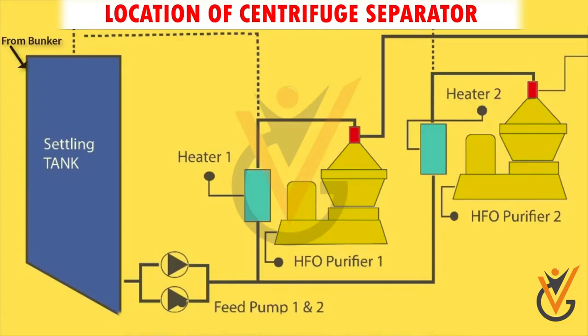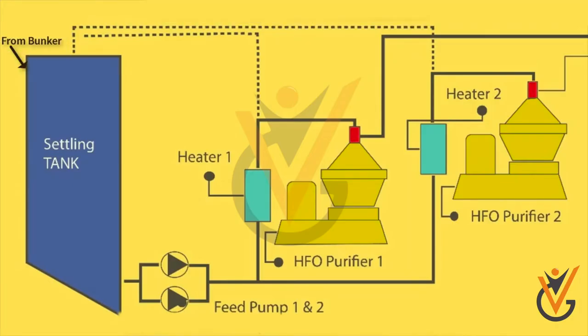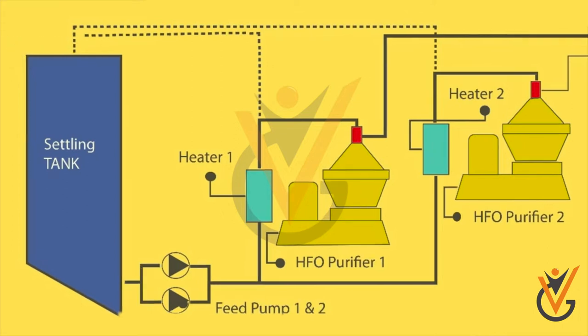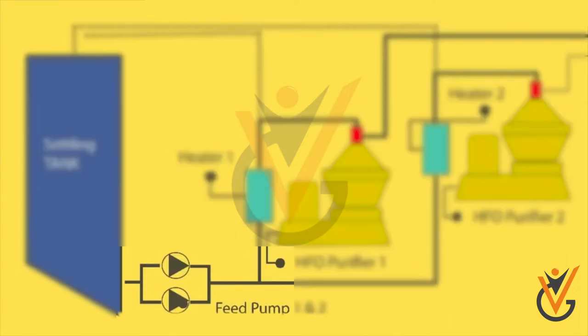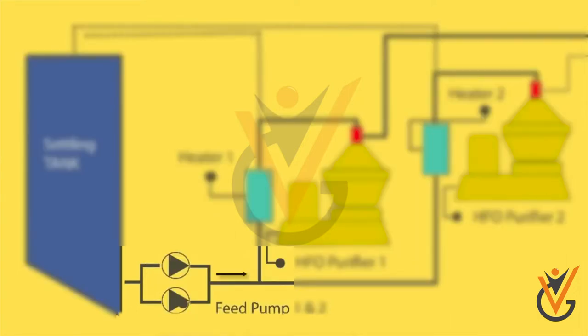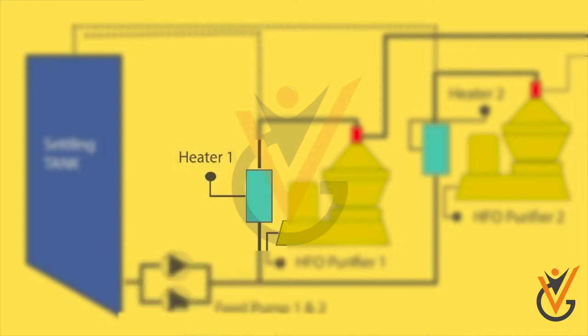Location of centrifuge separator. After receiving the fuel oil in bunker tank, we transfer them to first storage tanks and then to settling tanks, where it is stored and heated up to 50 to 60 degrees Celsius. There the heavier contaminants and water gets separated under the effect of heat. Fuel from the settling tank is drawn out through feed pump and passed through heater to raise its temperature to around 80 to 90 degrees Celsius.